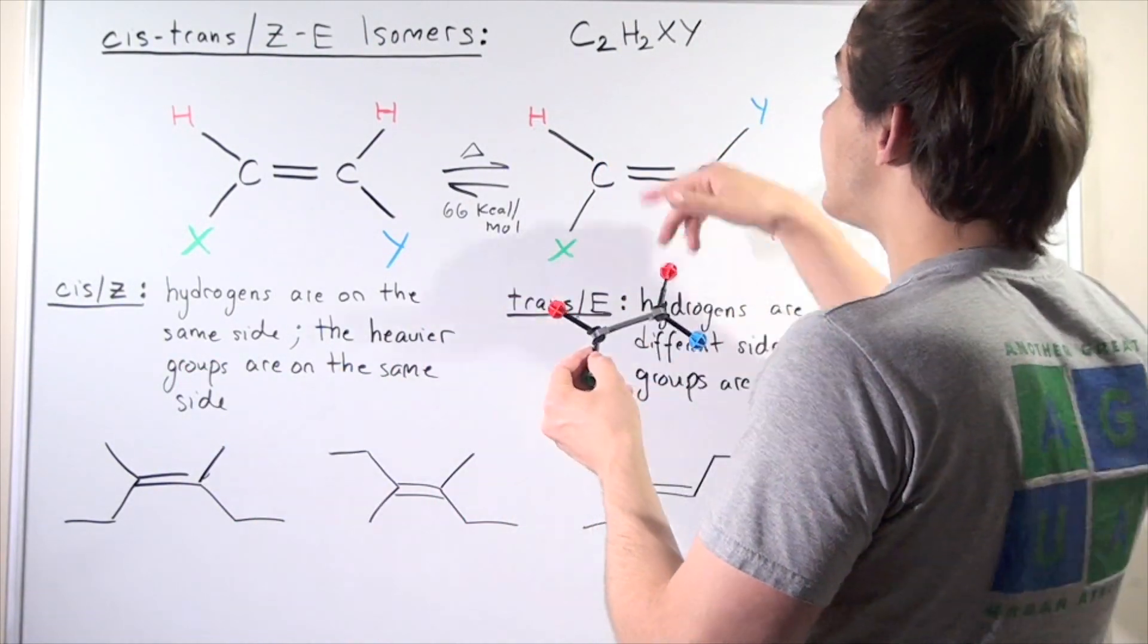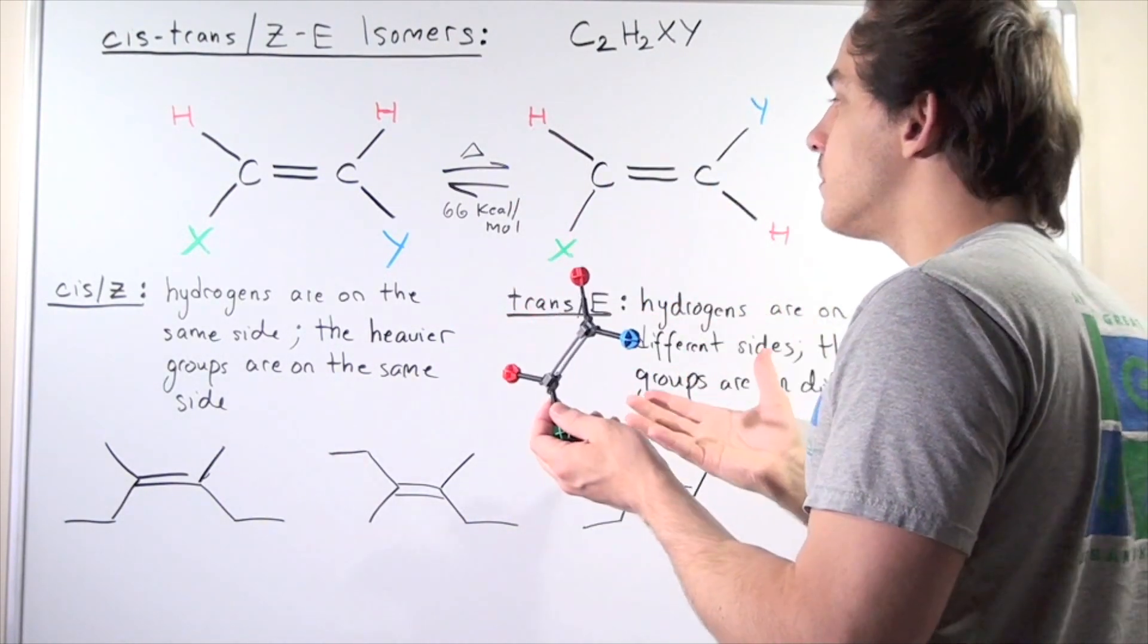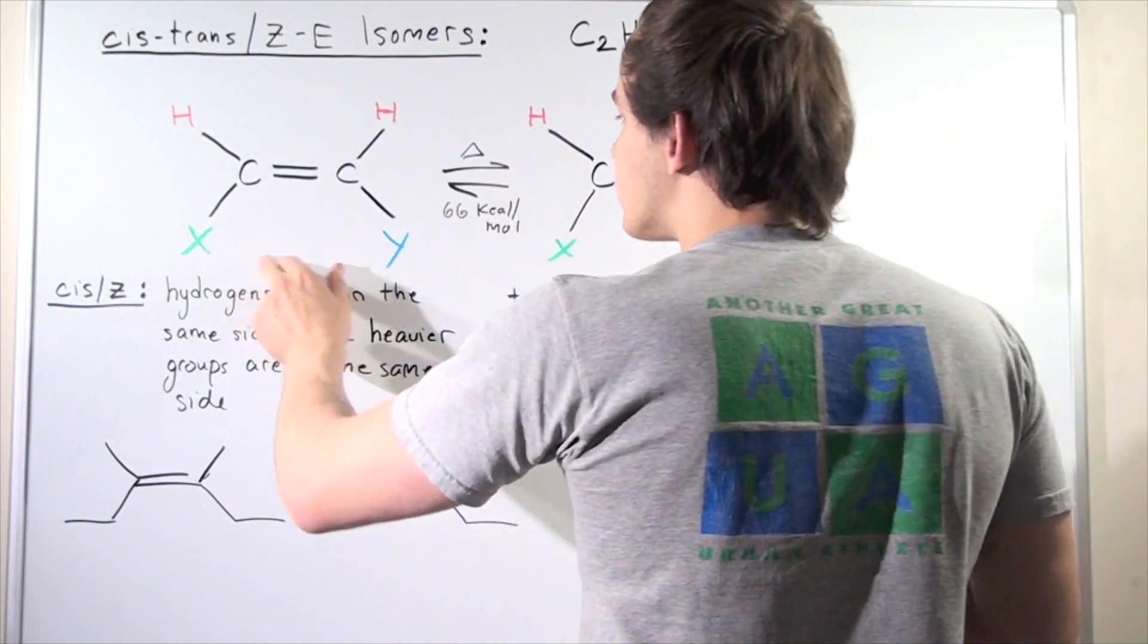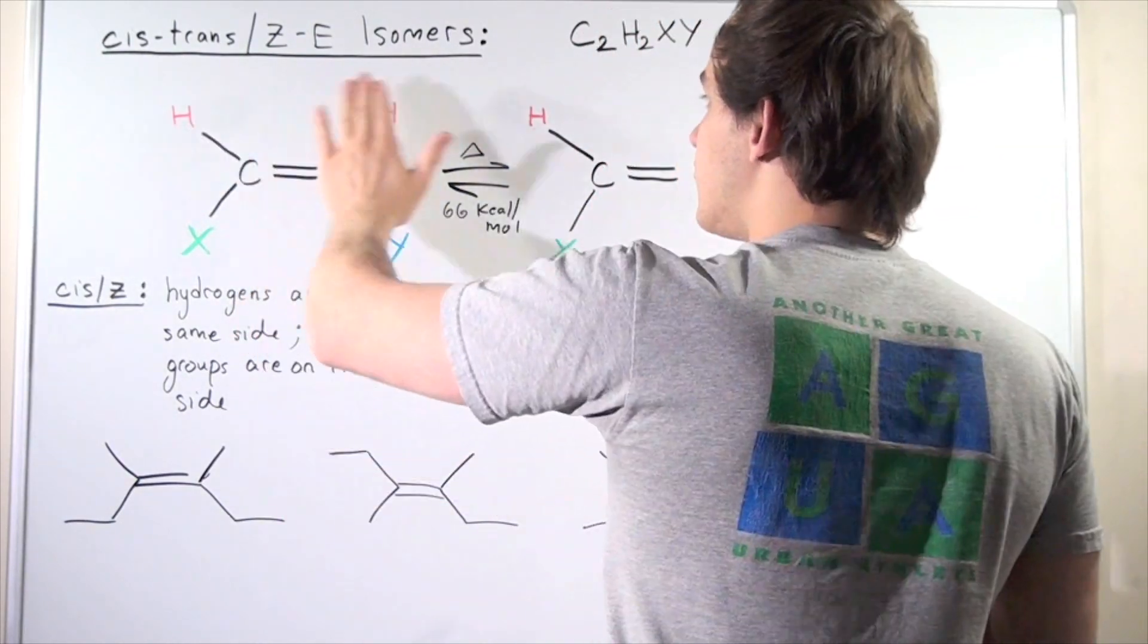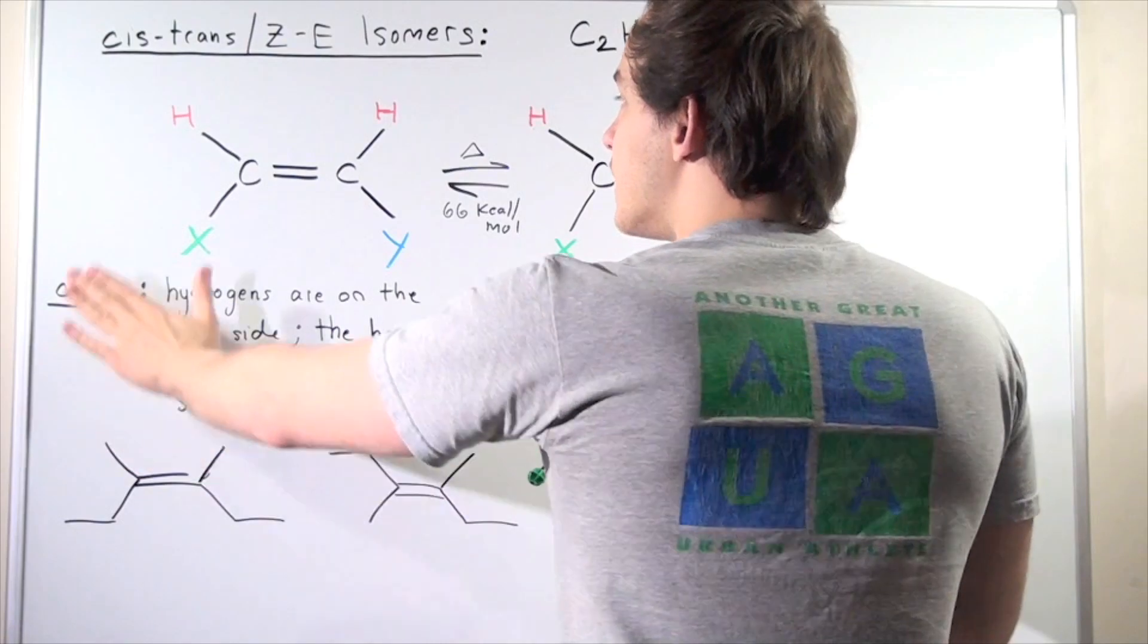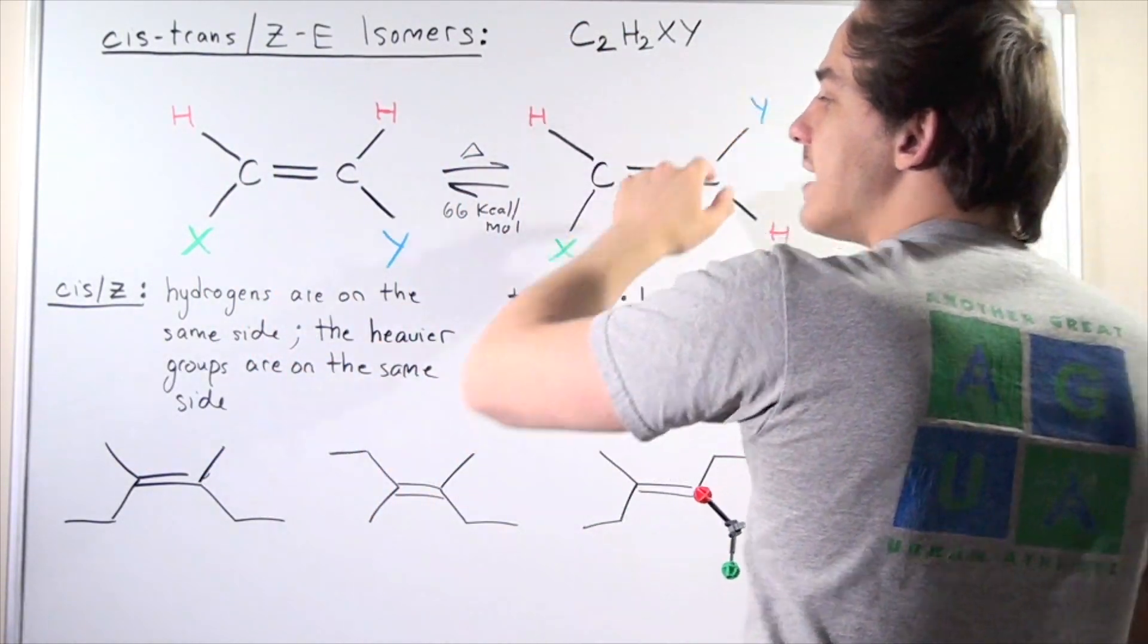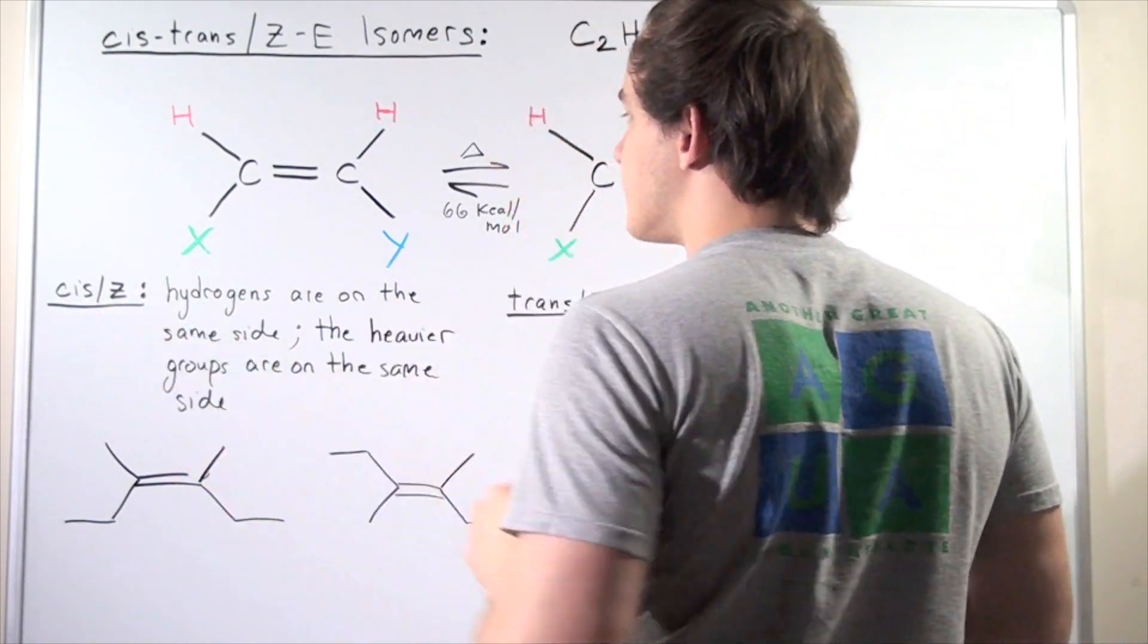Remember, we define X and Y to be any compound, molecule, or atom that is different than H, and that means our X and Y are both heavier than H's. So, this compound is one isomer of this molecular formula, and it's the cis or Z isomer.